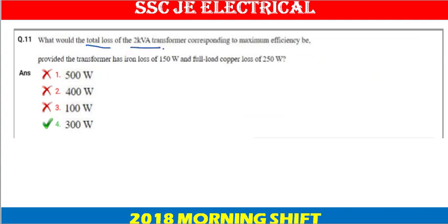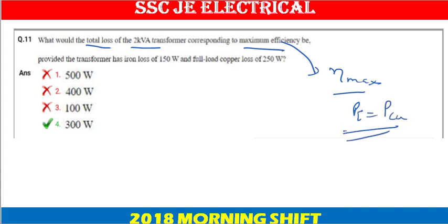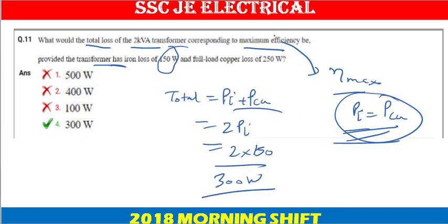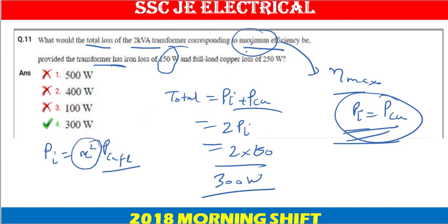Next question: what is the total loss of a transformer at maximum efficiency? The condition for maximum efficiency is that iron loss Pi equals copper loss PCU. If Pi equals 150 watts, then total loss equals Pi plus PCU equals 2 times Pi equals 2 times 150 equals 300 watts. The answer is option D, 300 watts.